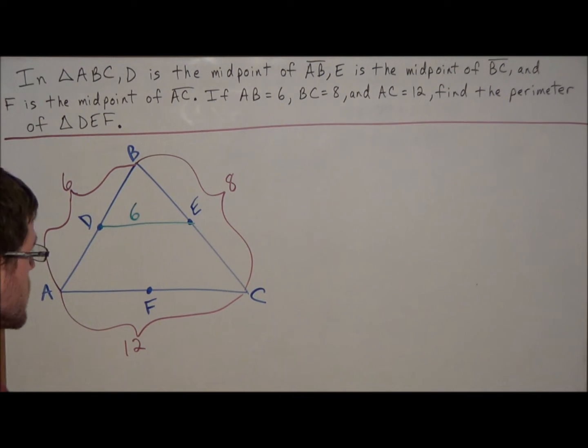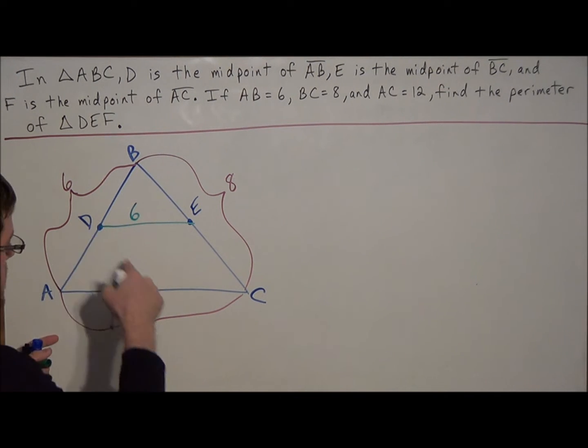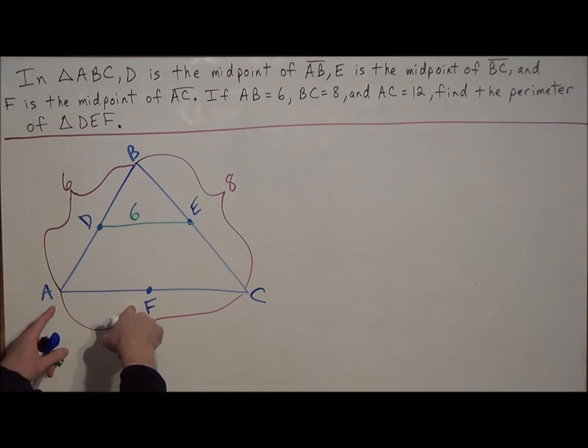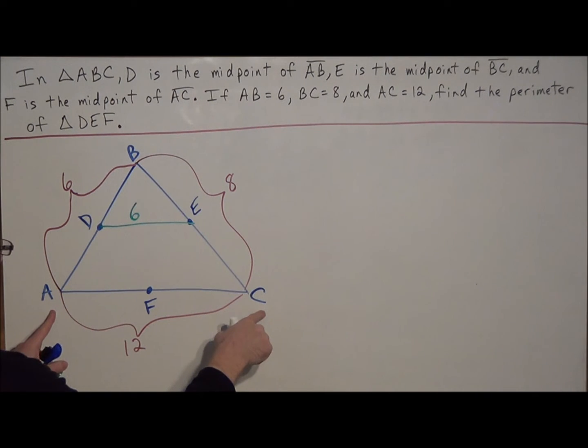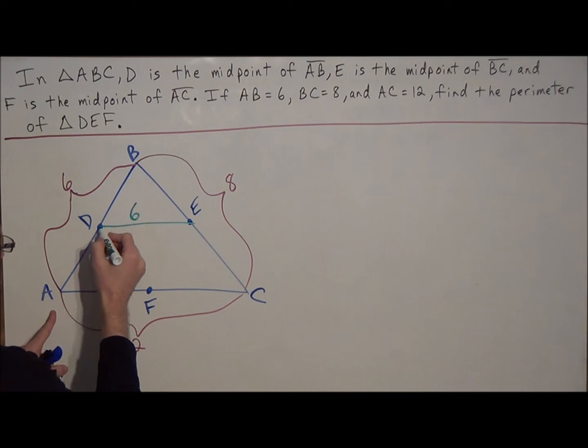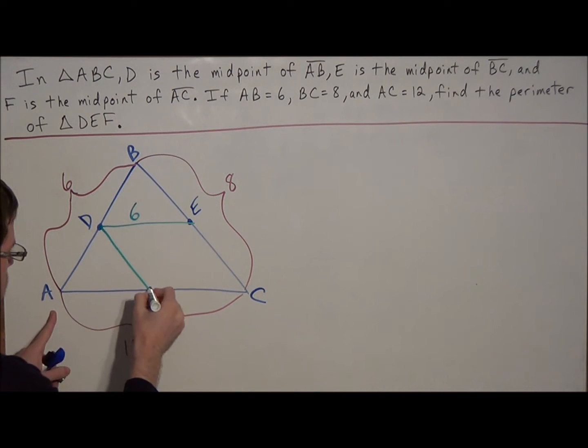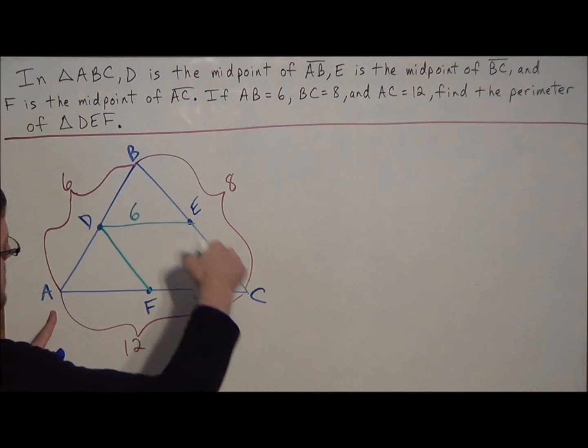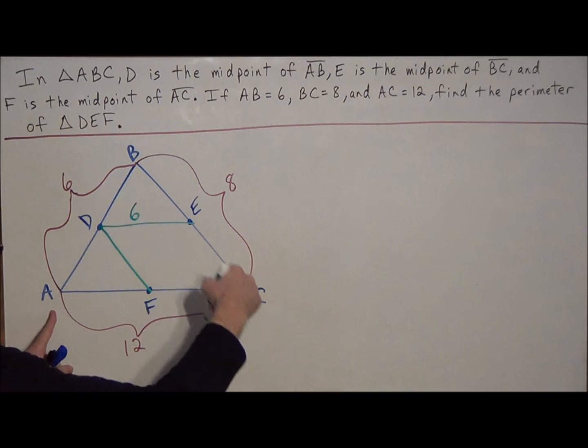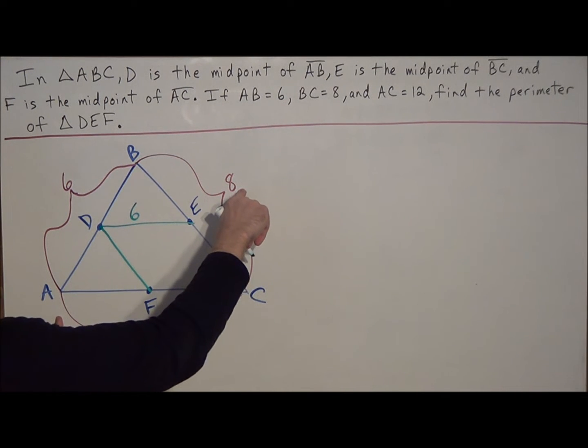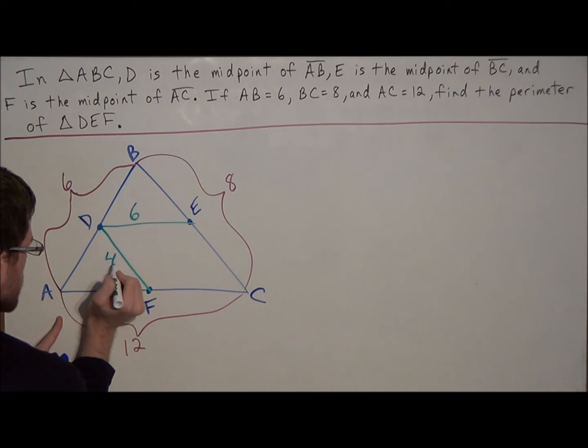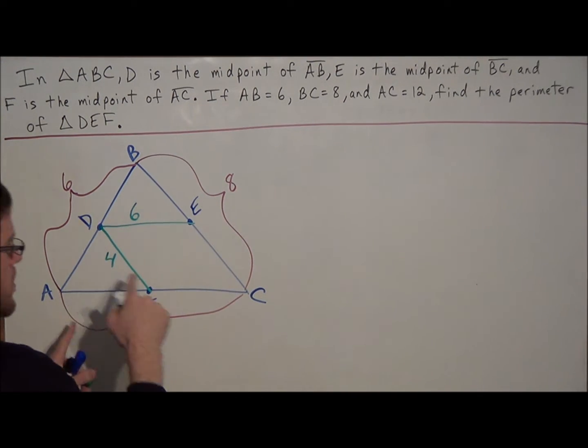So we use the theorem twice more. Next we can connect D to F, but notice that D and F are located on sides AB and AC respectively. So the third side in this case is going to be BC. So when we connect D to F, it's going to be parallel to BC, and it's going to be half the measure of side BC. So notice if BC is 8, DF is going to be half of that, so it's going to be 4.